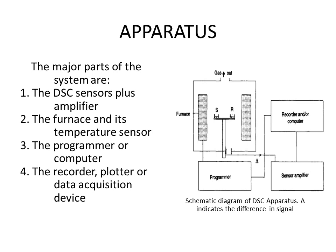The four major parts of a DSC system are: the DSC sensors plus amplifier, the furnace and its temperature sensor, the programmer or computer, and the recorder, plotter, or data acquisition device — which converts the changing temperature signal into a difference in power.